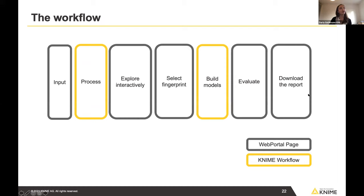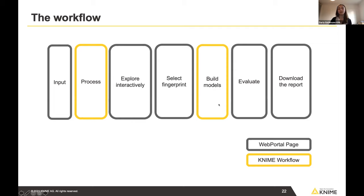The workflow we prepared has the following steps: first, data input; then preprocessing and defining metadata, which enables interactive data exploration; next, a step to select the fingerprint for machine learning; then building four machine learning models; and finally, evaluating them interactively and downloading a report. I'll show you the workflow first in the web portal, then in KNIME Analytics Platform. Steps highlighted in gray correspond to web portal pages; yellow steps like processing and model building won't appear in the web portal but I'll discuss them in the analytics platform.